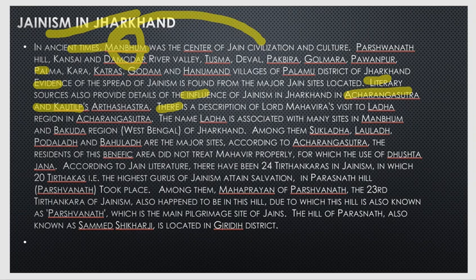This is a discussion of Lord Mahavir in the Acharanga Shastra. There are places called Suklad, Lahulad, Pohlad, and Bholad. According to the Acharanga Shastra, the residents of the benefic area did not receive Lord Mahavir properly, for which the term 'Tusharjana' was used.